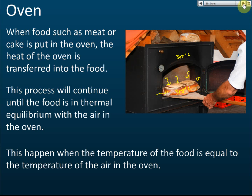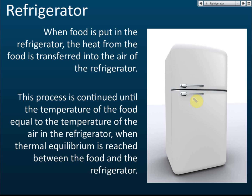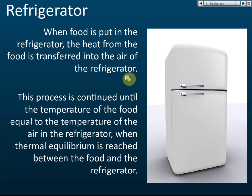For refrigerators, we want to cool the food. When food is put in the refrigerator, heat from the food transfers to the air of the refrigerator. This is because they haven't achieved thermal equilibrium — the temperatures are not the same. This process continues until the temperature of the food equals the temperature of the refrigerator, and then thermal equilibrium is achieved with no net heat flow between the food and the air of the refrigerator.